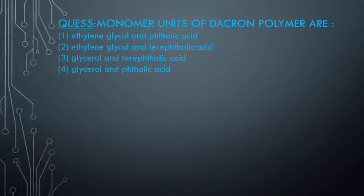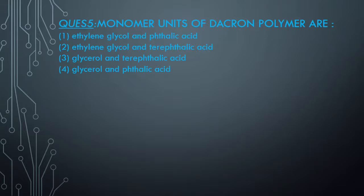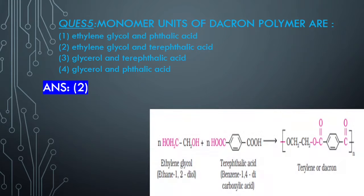Question 5: Monomer unit of Dacron polymer. Again this is from the same part and a simple question. Answer is option 2: ethylene glycol and terephthalic acid. I need not explain anything - I have discussed this in the starting of the video. You can also revisit that part. You should know the structure of both and you can easily make Terylene.